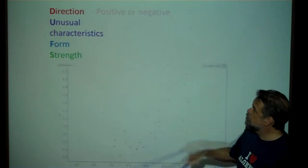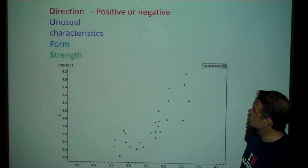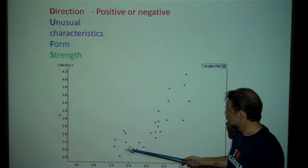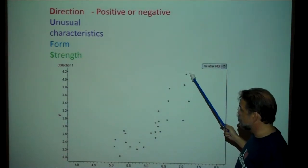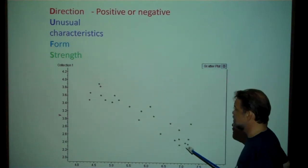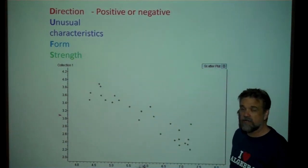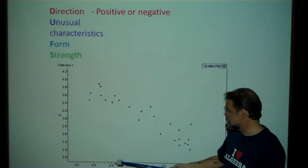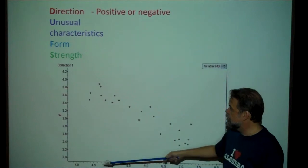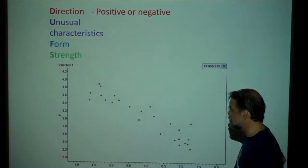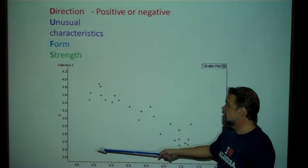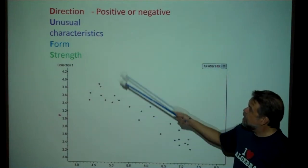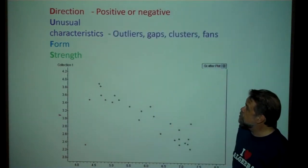Direction simply means positive or negative. Are my data going up or going down? If it's a negative direction, that means that as x goes up, y is going down — as your explanatory variable increases, your response variable decreases.